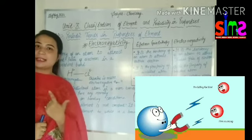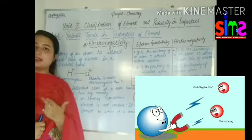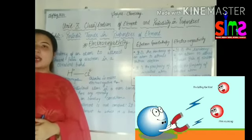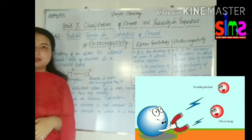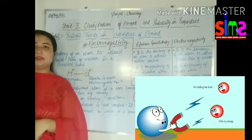First we have atomic radiation, second ionization energy, and third electron gain. Today we are studying the fourth type of property which is Electronegativity.